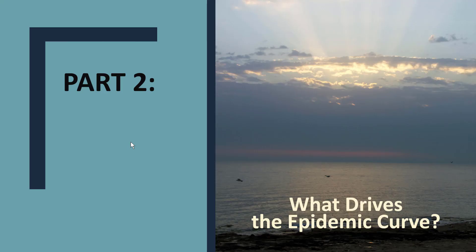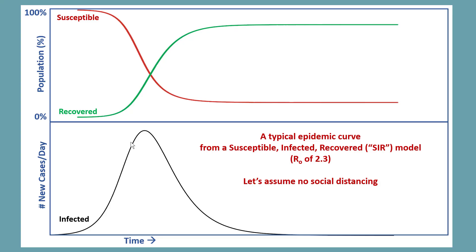The second part of this lecture describes what drives the epidemic curve. This figure shows a typical epidemic curve, which is generated by what's called a susceptible, infected, and recovered, or SIR model. The R0 in this model is 2.3. Let's just assume for the moment no social distancing — everything is going on as normal in everyone's life, and then we have this epidemic.